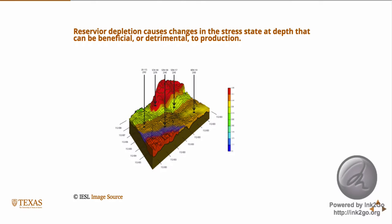What's bad is subsidence. If you use steam flood operations in bitumen in Canada, for example, you can cause the surface of the earth to subside to a measurable extent — and if you have structures up there, that's bad. Look up the subsidence craters in Yucca Flats north of Las Vegas, where underground nuclear testing created massive cavities that collapsed, leaving pockmarks visible in aerial photos. It's not that bad with petroleum operations, but you can get measurable subsidence at the surface — something we want to avoid if we can.